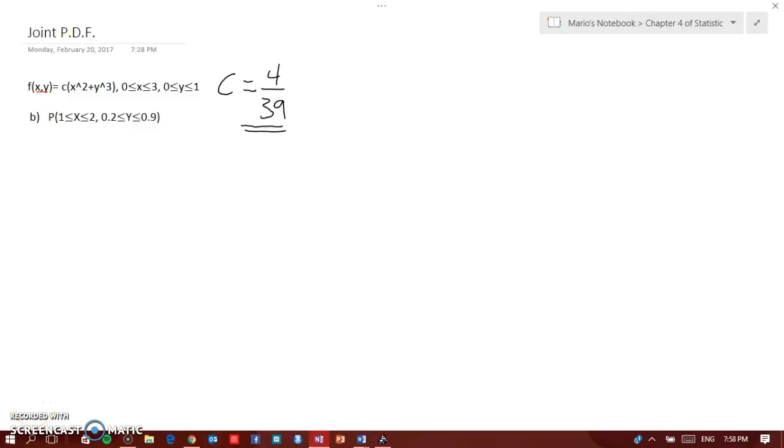Alright guys, so here we have to find the joint PDF, and we need to find the probability that X is in the region 1 to 2 and Y within 0.2 and 0.9. Now I already posted a video before where I worked out how to find C and we got that C was equal to 4 over 39.